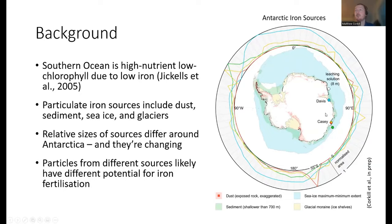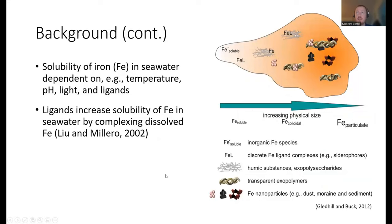These different sources differ greatly in size and vary regionally around Antarctica, and they're also changing with time — sea ice, for example, hit a record low extent recently. Particles from different sources likely have different potential for iron fertilization from a solubility perspective. A number of things change the solubility of iron in seawater, including temperature, pH, light, and ligands. Ligands are molecules that chelate or wrap up iron and keep it dissolved, increasing its overall solubility.